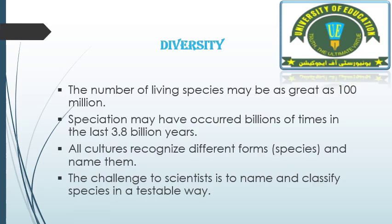The number of living species may be as great as 100 million, and speciation may have occurred billions of times in the last 3.8 billion years. This shows the enormous diversity of organisms over time, making it important to classify them into groups for easier study. Speciation means the formation of new species from previously existing species or populations.